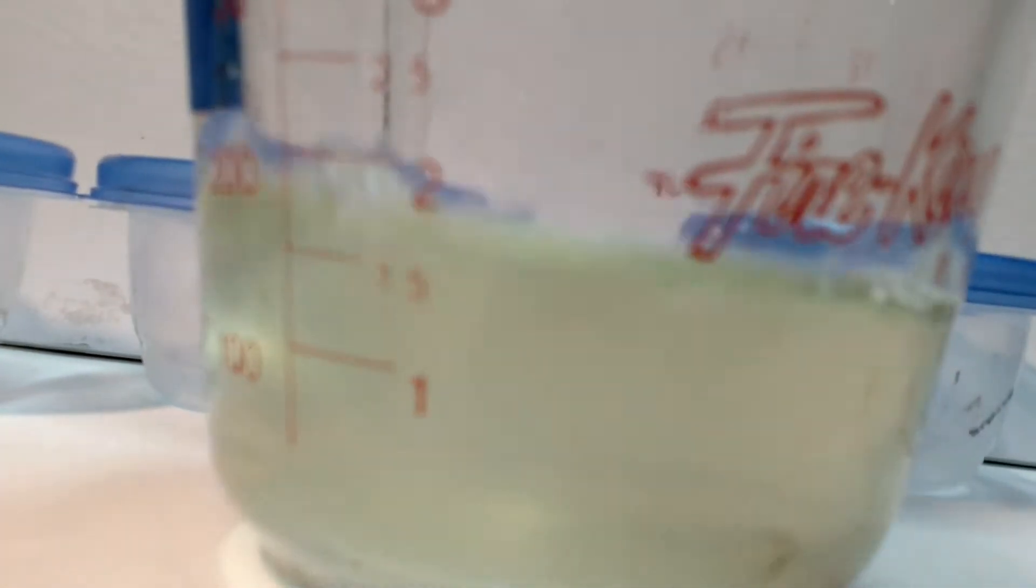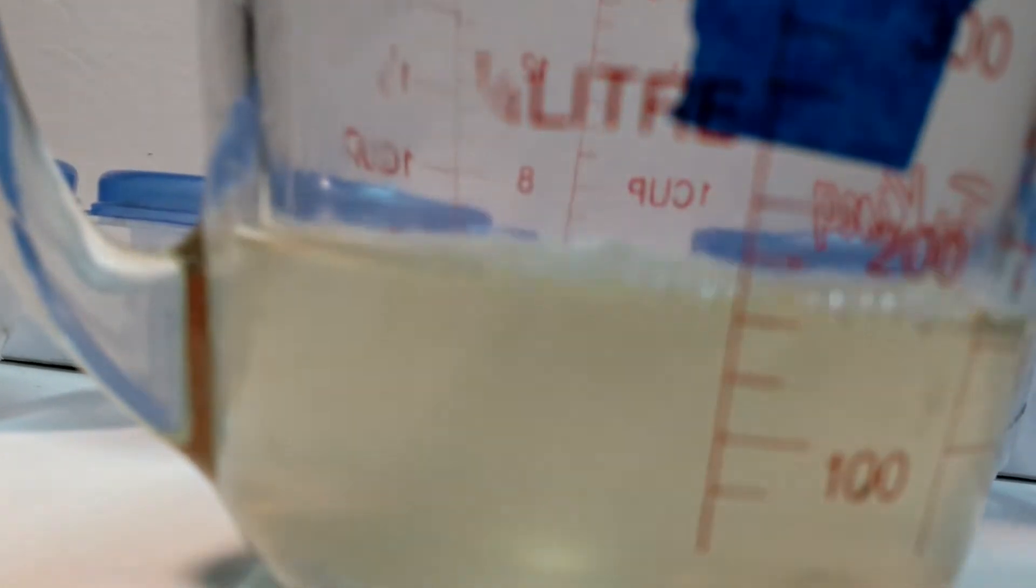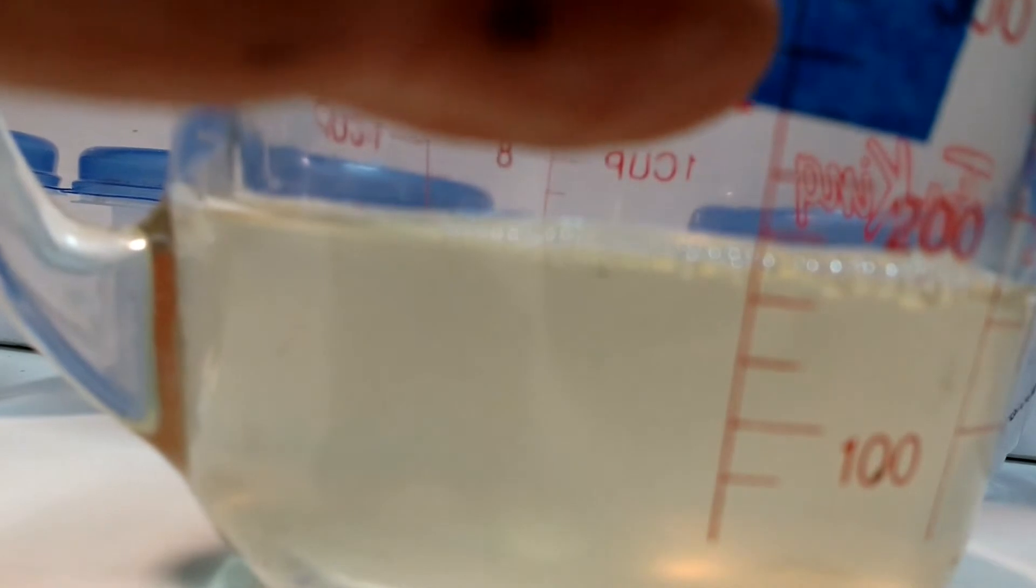Potato water. Measuring cup, strainer, cheesecloth over it. The water height should come up to that piece of tape, so we're a little bit short. We're just gonna make that up with water to get back to our original volume and we'll be all set.